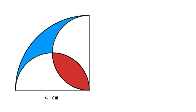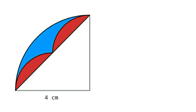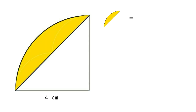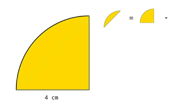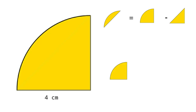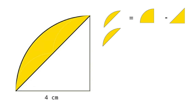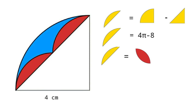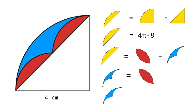Method 6: From the figure, cut the lens into two equal parts and place them together to get a segment. Area of segment equals area of this quarter circle minus area of triangle, so 4π − 8. Also, area of segment equals area of lens plus area of blue shape. Since area of blue shape equals area of lens, area of blue shape equals (4π − 8) / 2 = 2π − 4 cm².